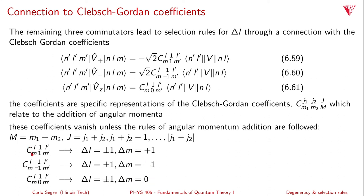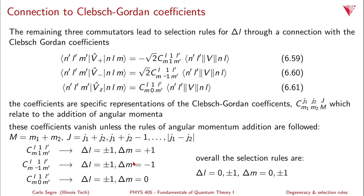So you can see clearly that the difference between the three cases is the middle number in the Clebsch-Gordon coefficient. In all three cases delta L is plus or minus 1, while delta M is plus 1, minus 1, or zero respectively. Overall therefore, the selection rules are: delta L equals zero or plus or minus 1, and delta M equals zero or plus or minus 1.